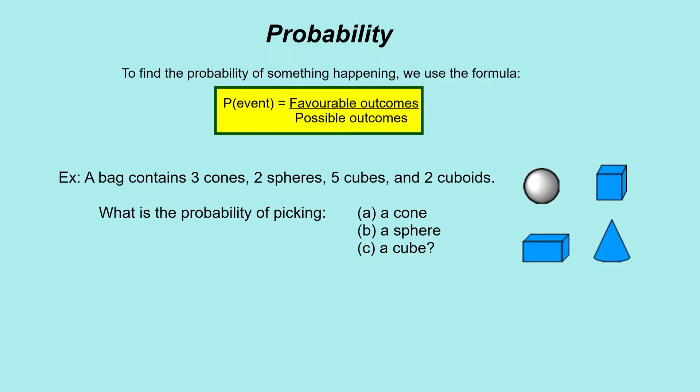Hi there, welcome to www.highschoolmaths.co.uk. Today we're going to be looking at probability. Probability is a way of showing mathematically how likely something is to happen. When you talk about probability in real life, you say something's likely to happen, unlikely to happen.